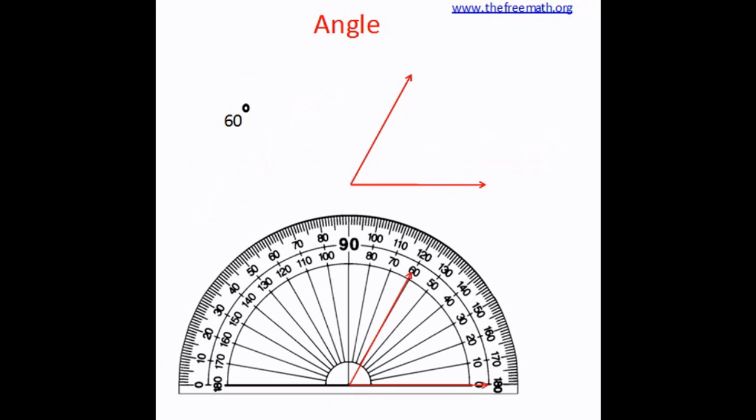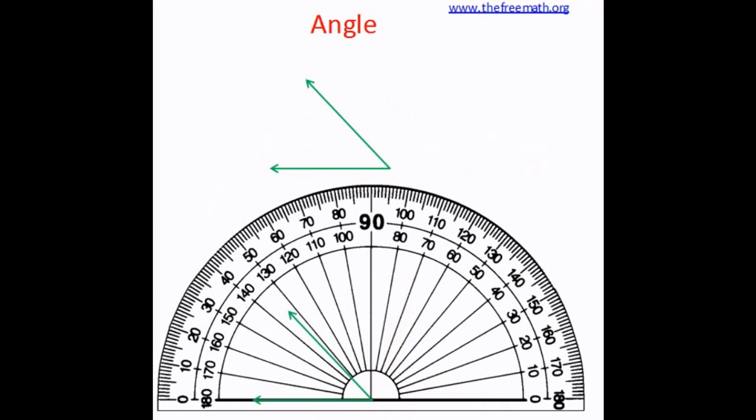Now what if my angle was like this, if it was facing in the opposite direction? I would still place the center on the vertex and the base line on one of the arms, but in this case it would be easy for me to measure this angle using the outer scale. So this is how you measure the angle using the protractor.